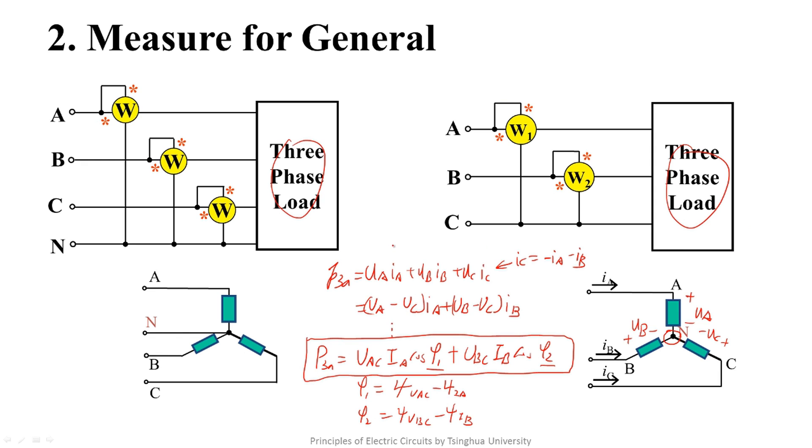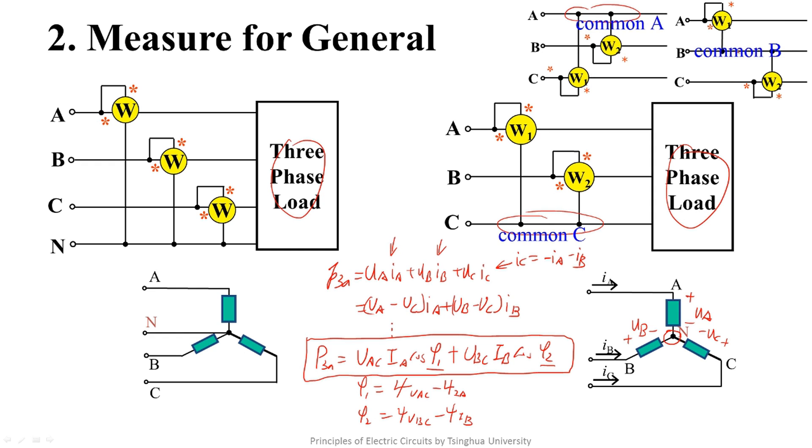Similarly, because IA equals minus IB minus IC or IB equals minus IA minus IC, we also have two other connections. The first connection is called common C connection, the second connection is common A connection, and the third is common B connection.